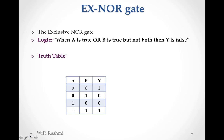Now XNOR gate. XNOR is exclusive NOR. Its logic: when A is true or B is true but not both, then Y is false - just opposite of XOR. In XOR, if A true or B true but not both, Y was true. In XNOR it is false. So whenever one input is 1, output is false. When both inputs are the same, output is 1. Keep in mind: same inputs → output 1, different inputs → output 0 for XNOR.